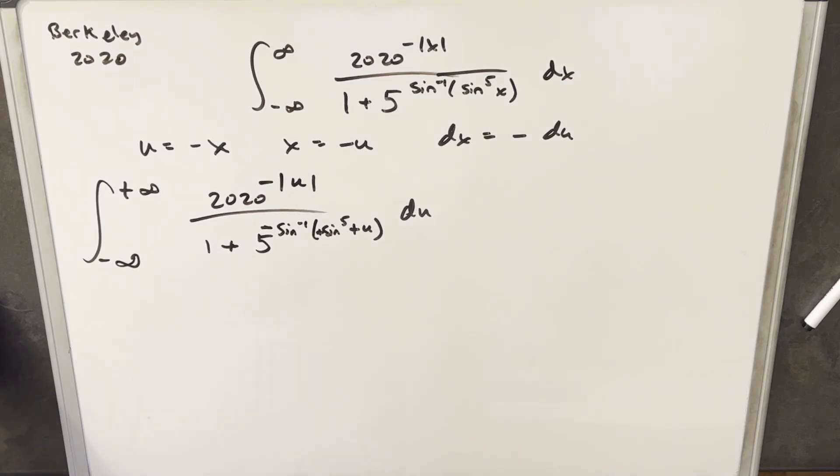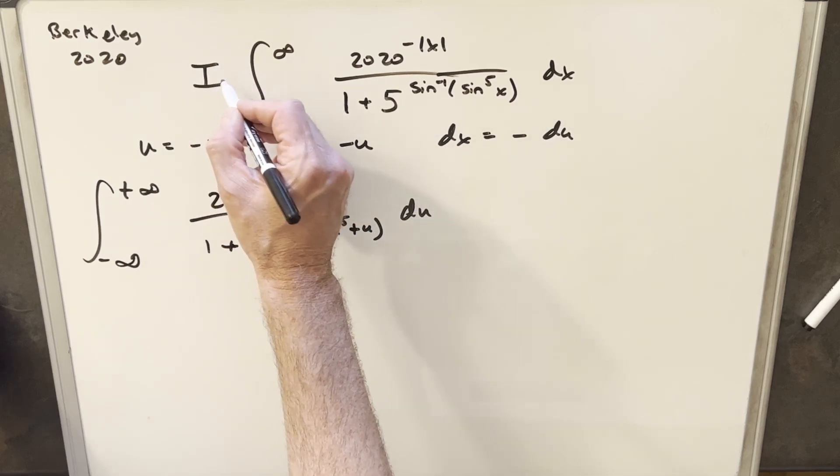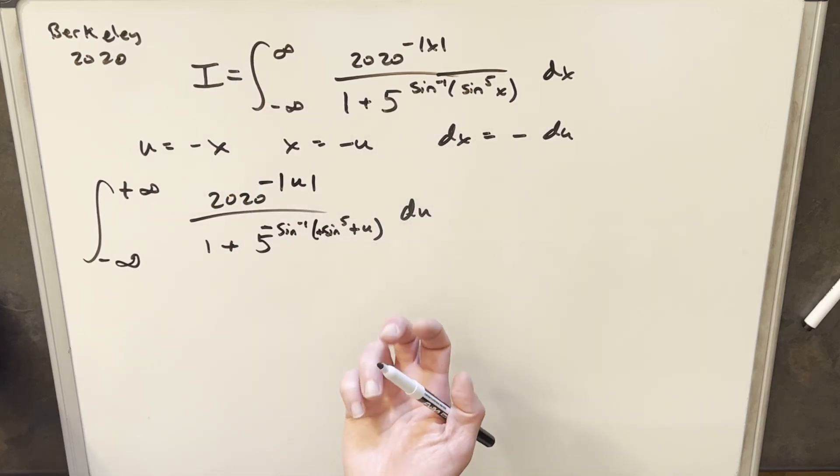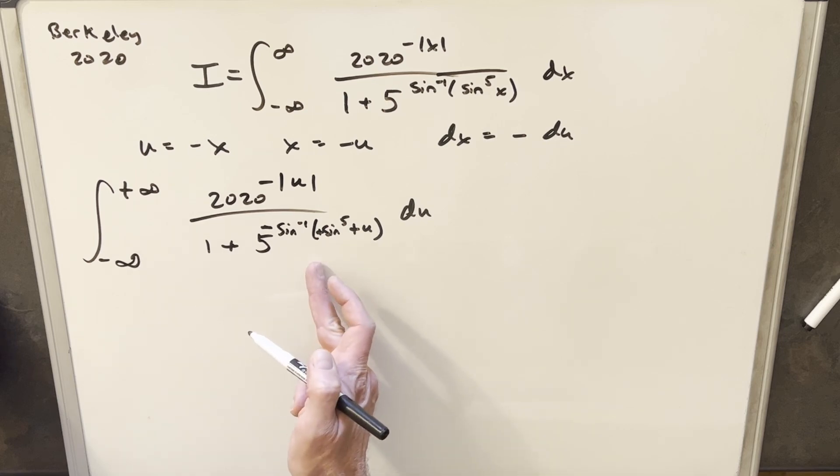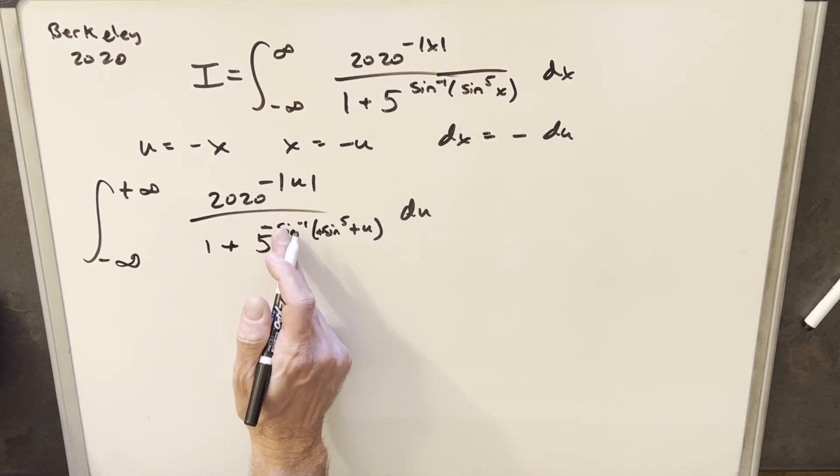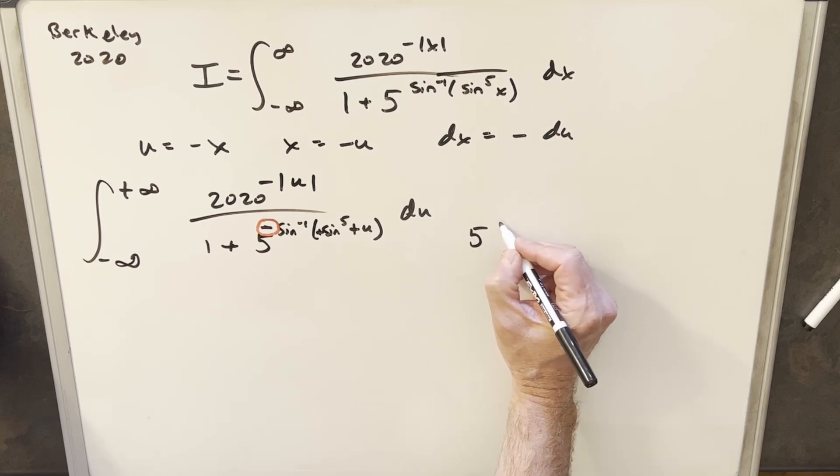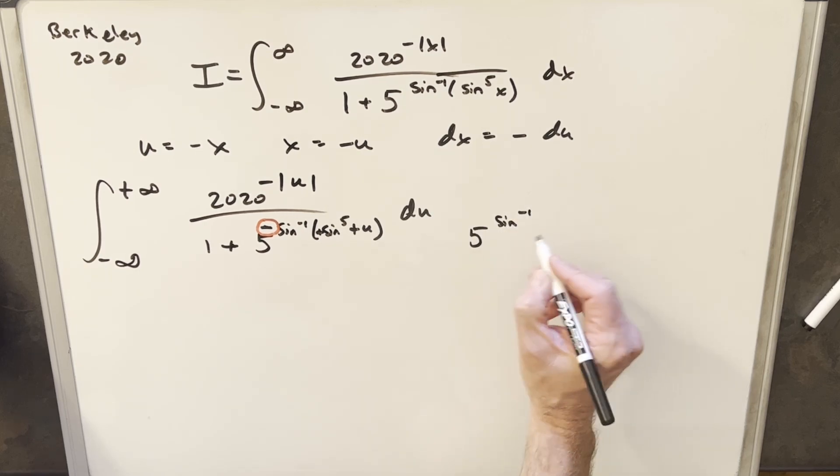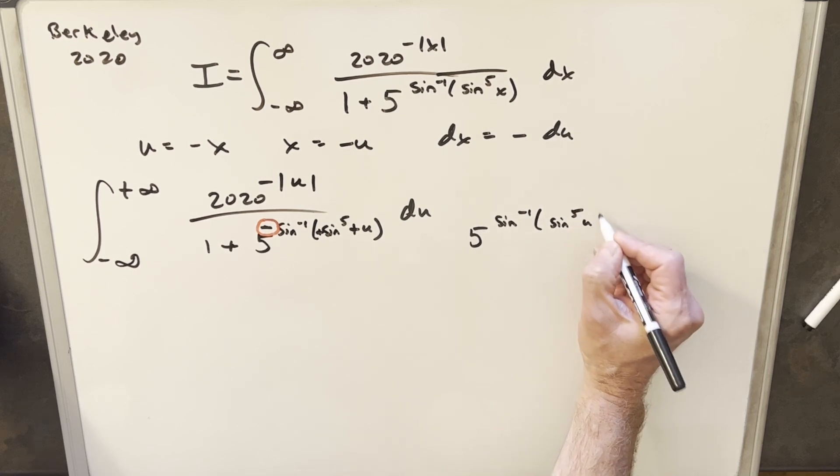Now one other thing I want to do, and you've probably seen me do this a lot of times with a symmetry problem, is we're going to want to add it back to our original integral. We'll call this i. So we're going to need two things. We're going to want to get everything in one variable, so I'm going to need to change this back to x. But also we want the denominator to be the same. And we're close, but we have this minus sign here. So what I want to do to fix this, I'm going to multiply the numerator and denominator by this thing right here, arc sine sine to the 5th u.